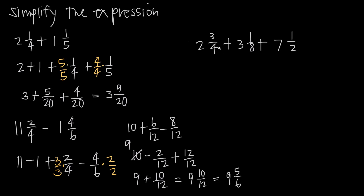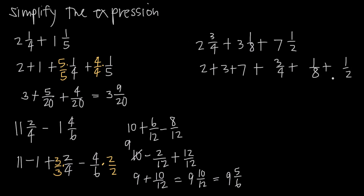Looking at our final example: 2 and 3/4 plus 3 and 1/8 plus 7 and 1/2. I pull my whole numbers out: 2 plus 3 plus 7, and separately add the fractions: 3/4 plus 1/8 plus 1/2. I need a common denominator, and the least common multiple of 4, 8, and 2 is 8. To get 8 as a common denominator, I multiply 3/4 by 2/2, keep 1/8 the same, and multiply 1/2 by 4/4.